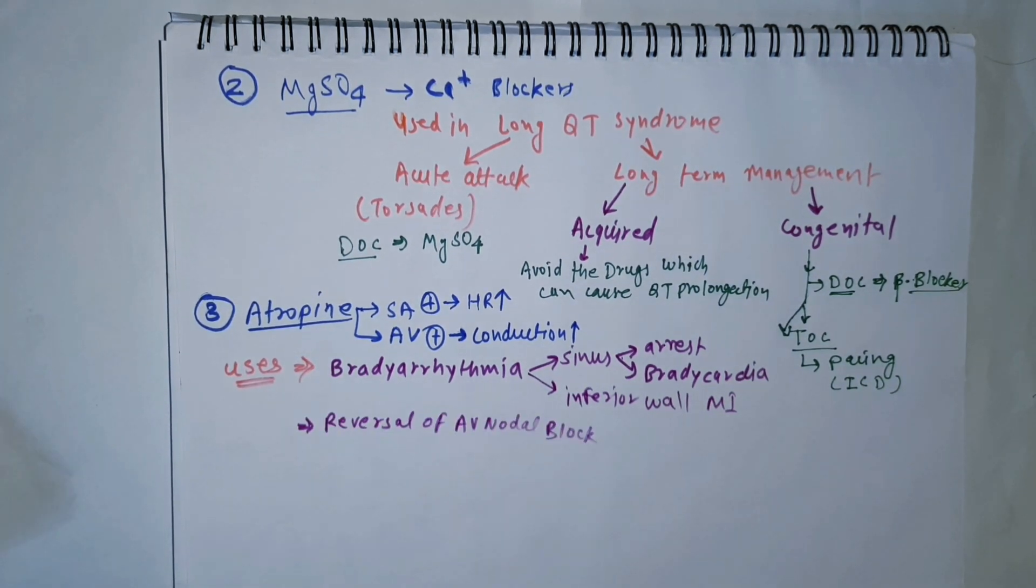Atropine is also used in the reversal of AV node block in cases of digoxin toxicity.